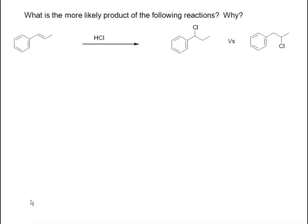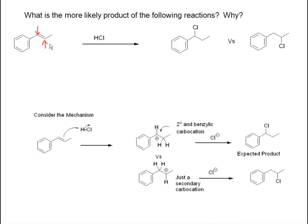What is the more likely product of the following reactions, and why? The first reaction is the addition of HCl to a double bond. We know that addition of HCl occurs in a Markovnikov fashion. But both ends of this double bond are equally substituted, so which is the Markovnikov product? Let's go through the mechanism to figure it out.